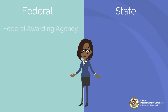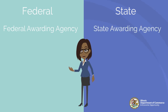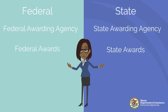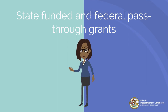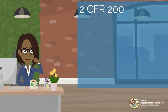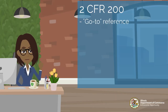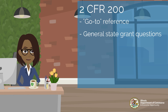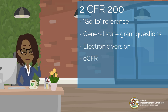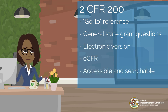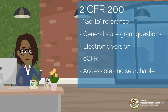Federal awarding agency can be read as state awarding agency, and federal awards as state awards. This pertains to both state-funded and federal pass-through grants administered by the State of Illinois. 2CFR 200 is recommended as the go-to reference guide for all general state grant regulation questions, and is accessible in electronic form via eCFR. The entire document is available for grantees to reference throughout their grant journey.